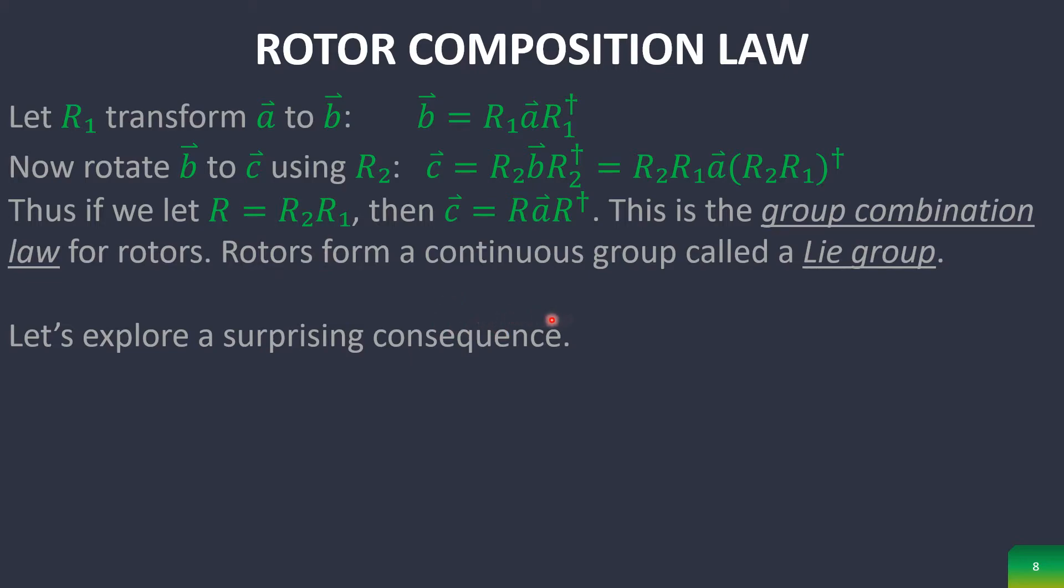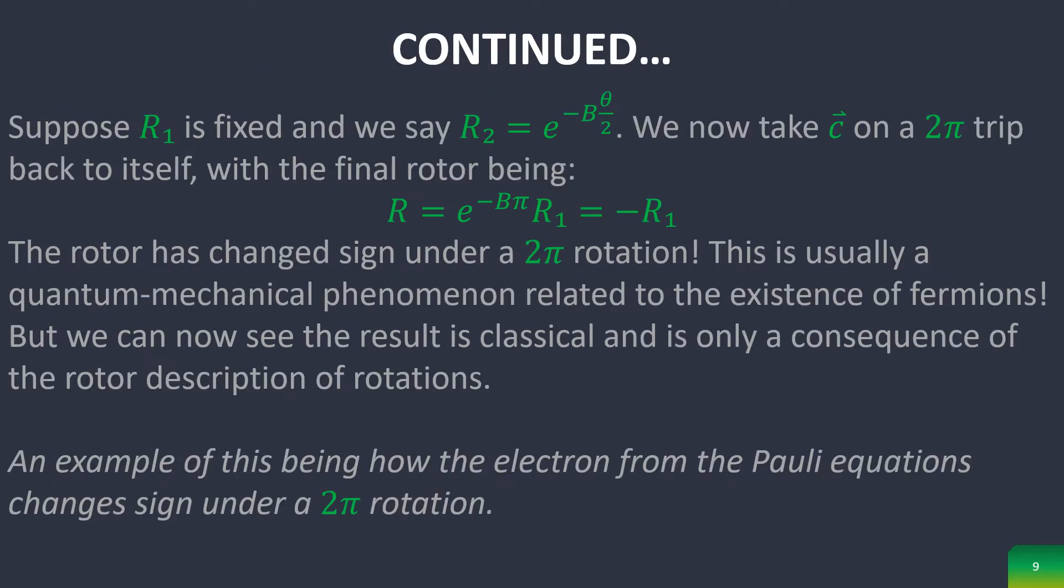Now let's explore a surprising consequence. Suppose R sub 1 is fixed and we say R sub 2 is equal to an exponential raised to the negative bivector θ over 2. Now let's take some vector C on a 2π trip back to itself. We notice that the rotor changes sign under a 2π rotation, which is usually a quantum mechanical phenomenon related to the existence of fermions. But we can now see that the result is classical and is only a consequence of the rotor description of rotations.